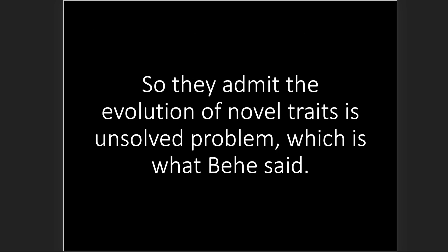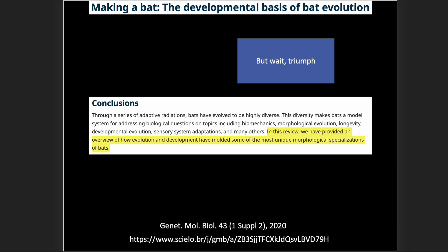They admit the evolution of novel traits is an unsolved problem — which is what Behe said. But moving to the conclusion section of the paper, suddenly it's triumphant: 'In this review, we have provided an overview of how evolution and development have molded some of the most unique morphological specializations of bats.' Wait — where was that? I didn't see descriptions, explanations, or details of how evolution molded these specializations. This is all circular: they assume the bat evolved, and any differences they observe — well, that's what evolution did. So: 'We provided an overview of how evolution works.'